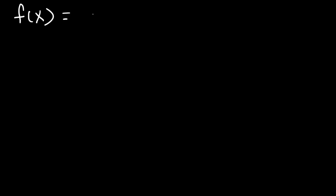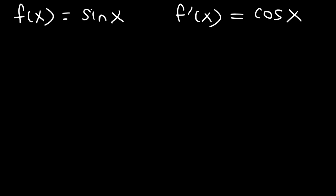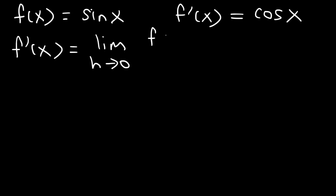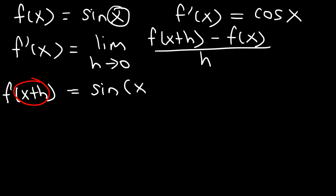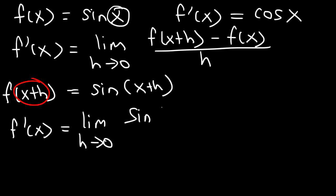Now let's say f of x is sine x. How can we prove that f prime of x is indeed cosine x? We can use the limit definition of a derivative: f prime of x is equal to the limit as h approaches 0 of f of x plus h minus f of x, divided by h. If f of x is sine x, then f of x plus h is sine of x plus h.